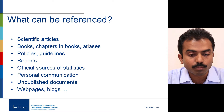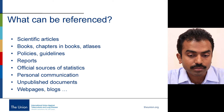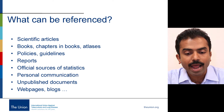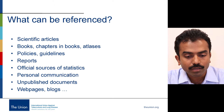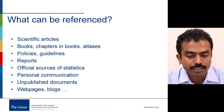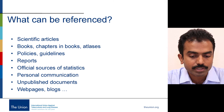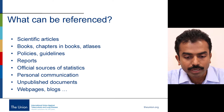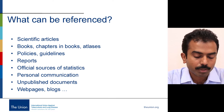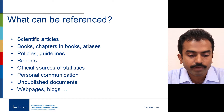What can be referenced? Well, the most common things referenced in articles are other scientific articles. Other things we can reference are books, chapters in books, atlases, policy documents by global agencies like the World Health Organization — their policies and guidelines — reports, or sometimes official sources of statistics from national bodies. Very rarely, some journals may allow personal communication from credible experts, or unpublished documents like an article already accepted for publication and in press but not yet out. Sometimes even web pages or blogs.